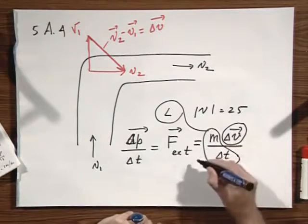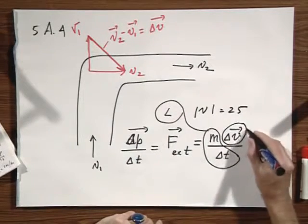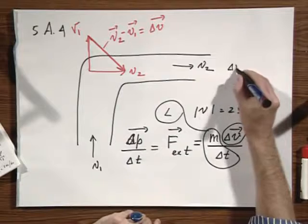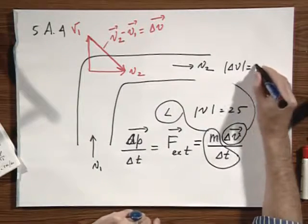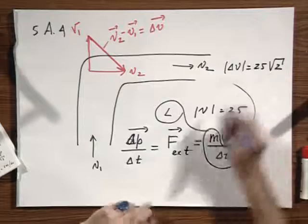And what is the magnitude of delta V? The magnitude of delta V equals 25 times the square root of 2.